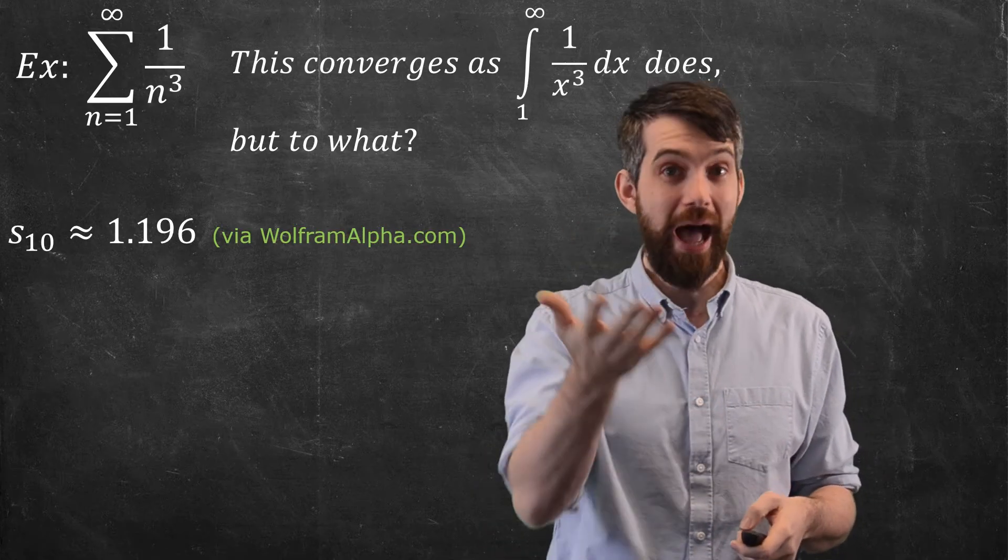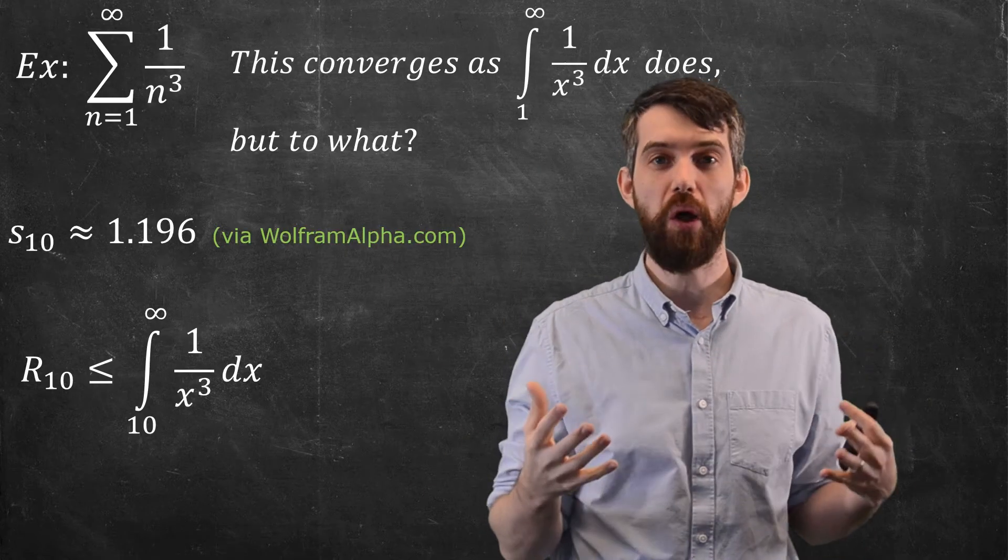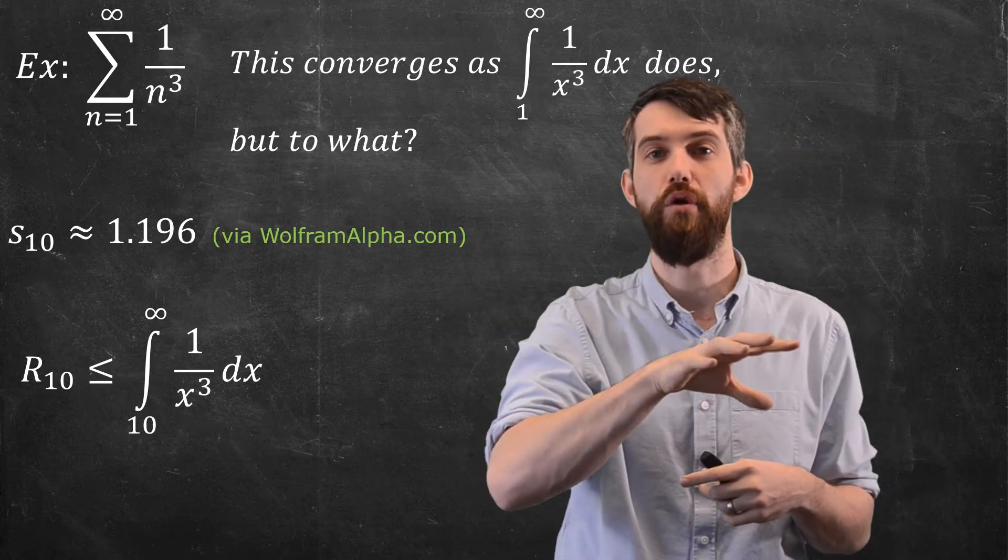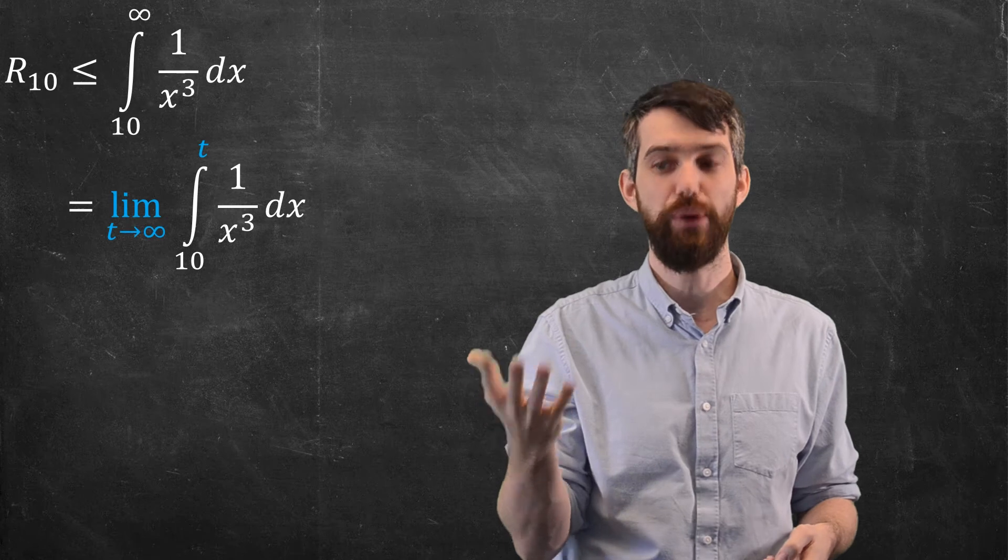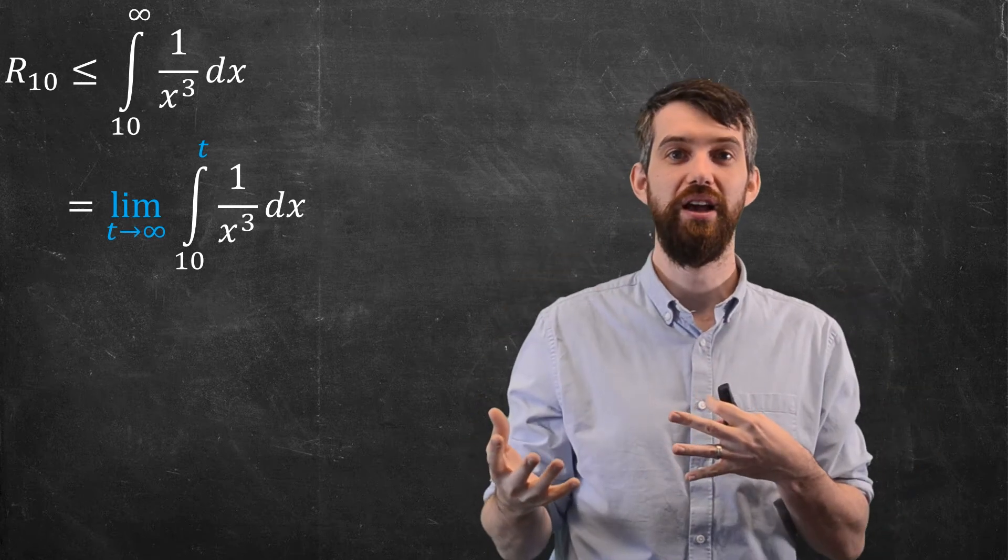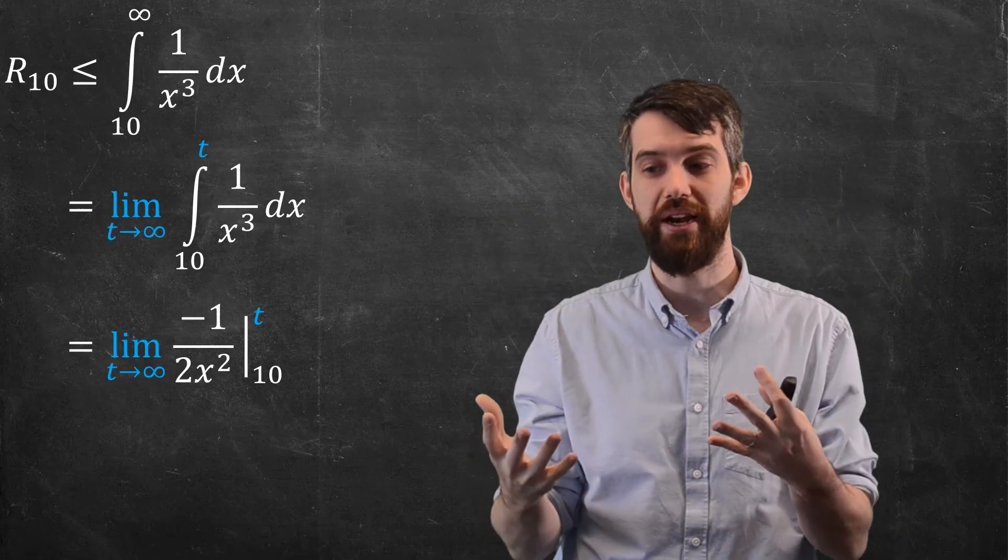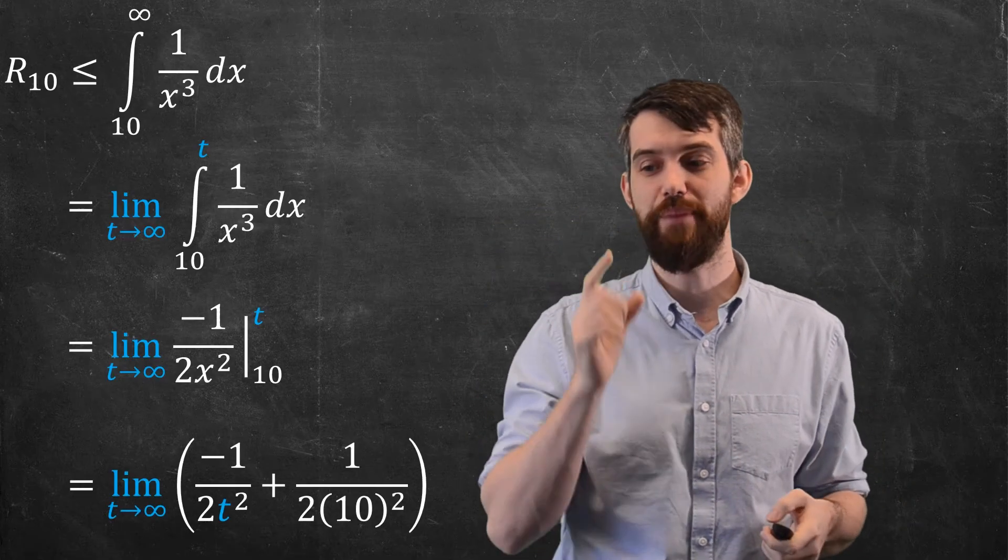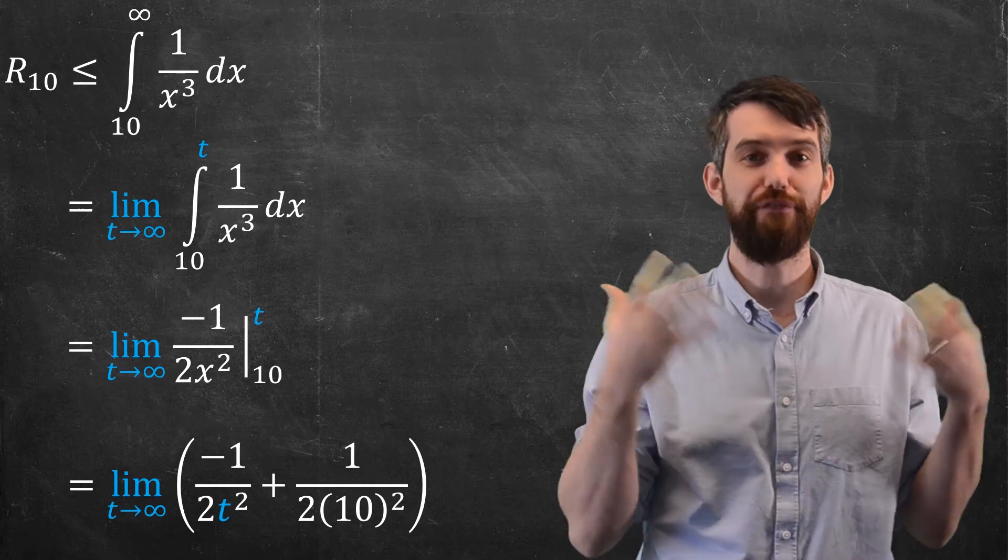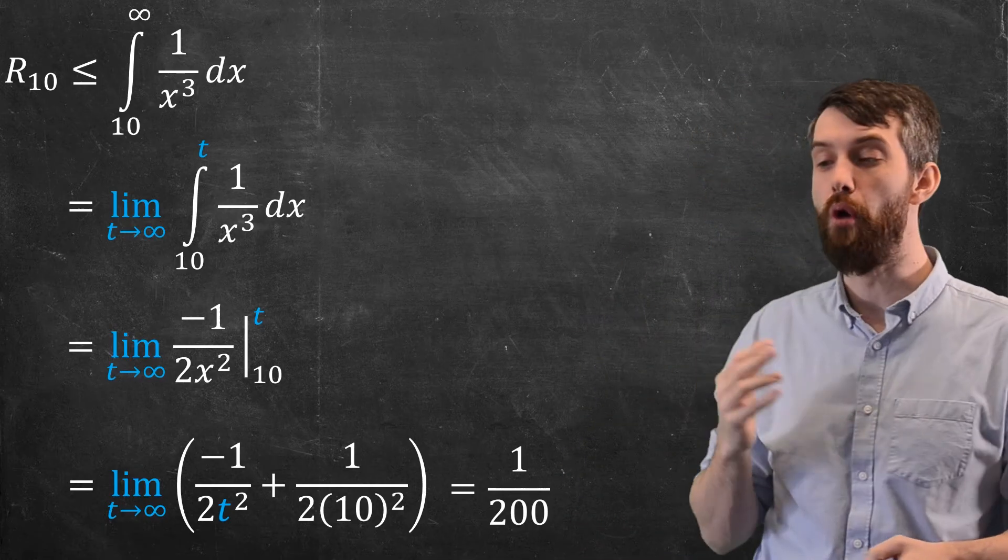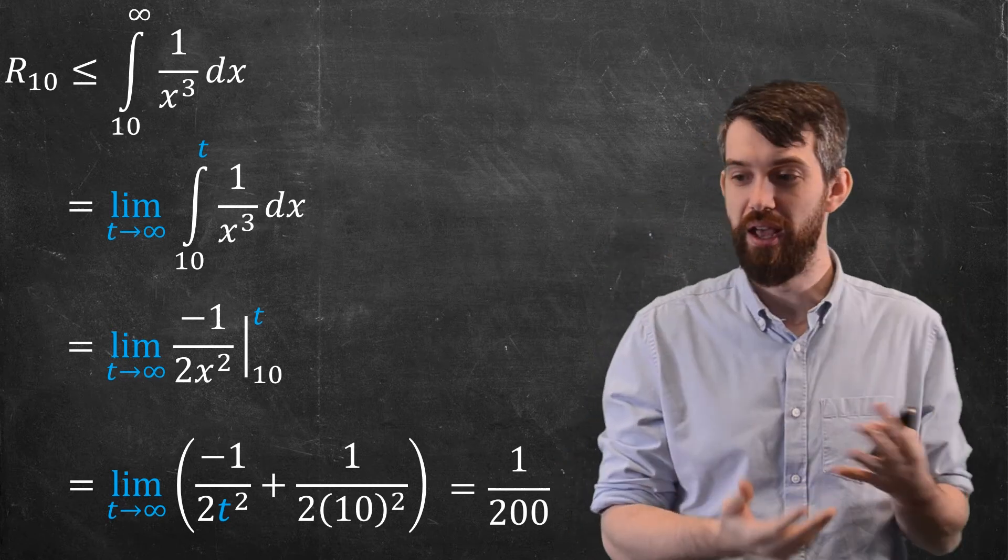What about the remainder? By comparing it to an integral, R10, the remainder when you take 10 terms, is something smaller than the integral from 10 up to infinity of 1 over x cubed dx. It's an improper integral, so I talk about the limit as t goes to infinity of the integral from 10 to t. I integrate using the power rule, I get minus 1 over 2 x squared. I plug in the t and the 10. Because t is in the denominator, as t goes to infinity, the first term goes away, and I just have 1 over 200. So the remainder is something smaller than 1 over 200.